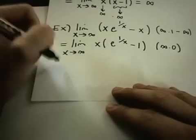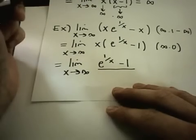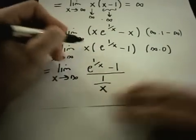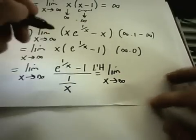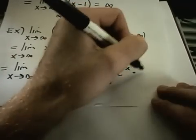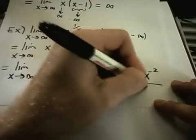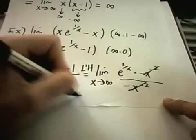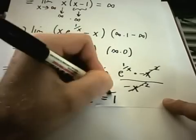At this point I'm going to put one of these in the denominator. I'll leave e to the 1 over x minus 1 in the numerator — I usually leave the more complicated expression on top — and in the bottom I'll take 1 over x. Now if I use L'Hôpital's rule, the derivative of e to the 1 over x is e to the 1 over x times negative x to the negative second. The derivative of 1 over x on the bottom is also negative x to the negative second. Those cancel, leaving e to the 1 over x, and as x goes to infinity that gives e to the 0, or 1.